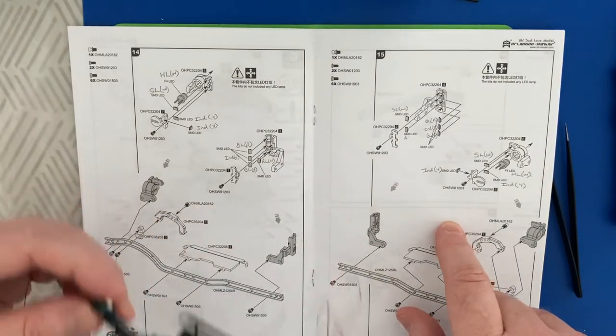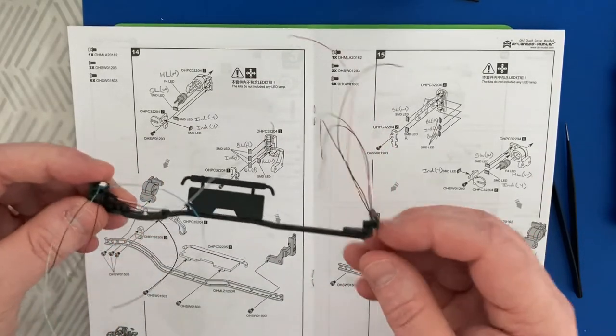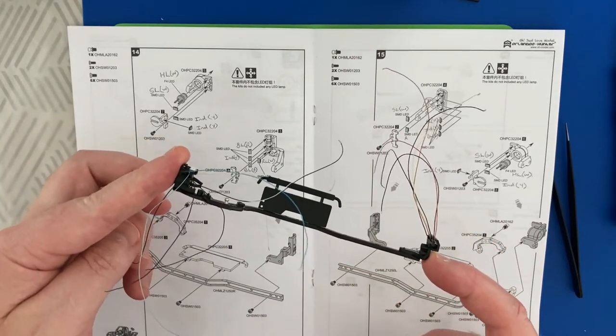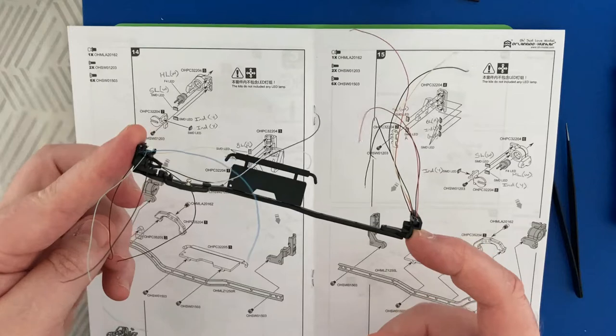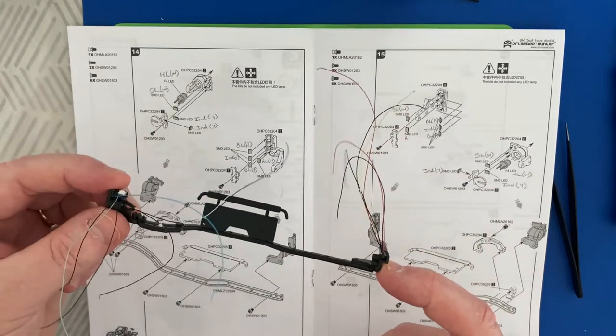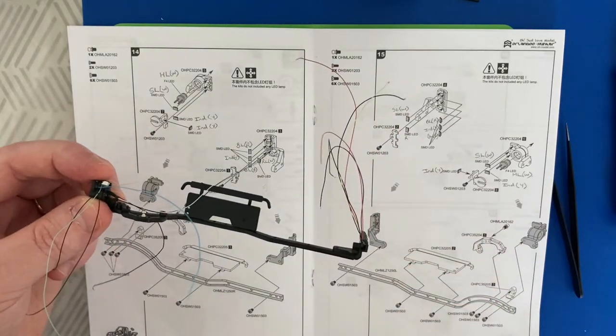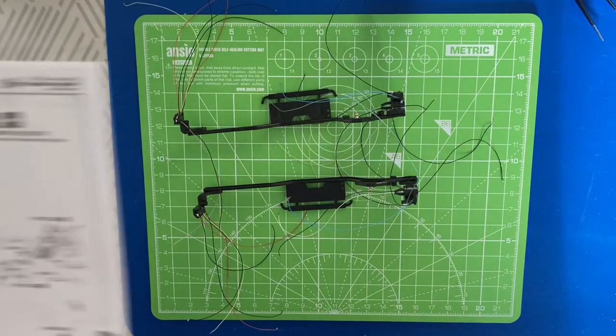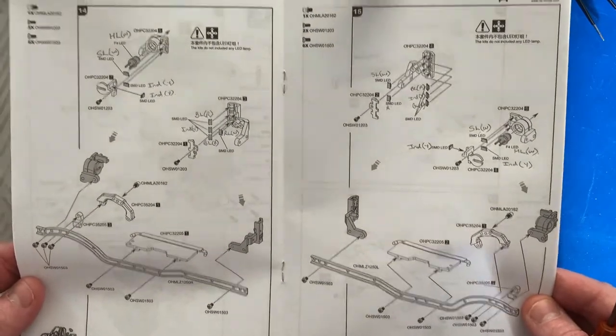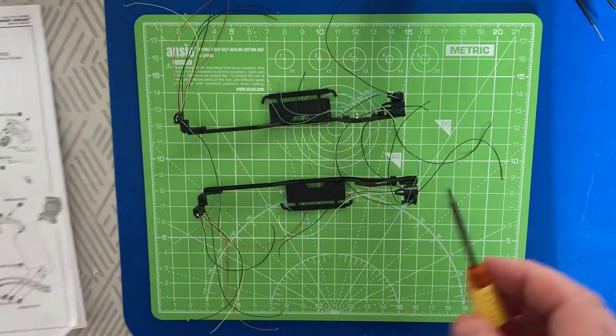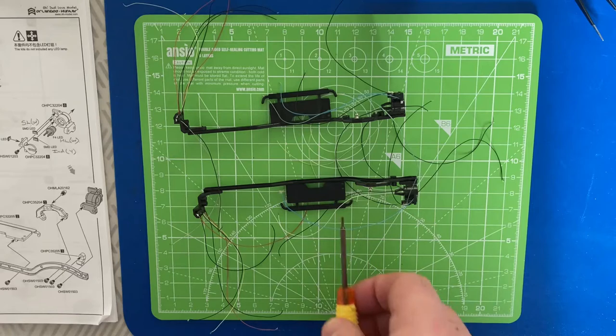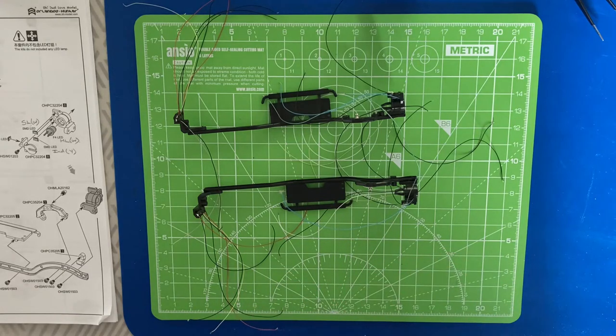So step 15 is effectively a mirror image of step 14. So I shall do that off camera. So you don't have to see the same thing again. That's now steps 14 and 15. You now have the two ladder frames completed with the running boards. That's steps 14 and 15.